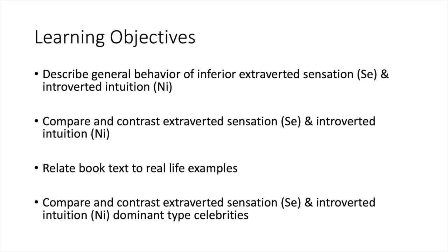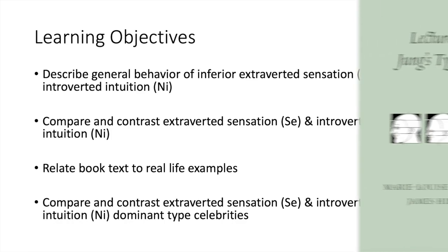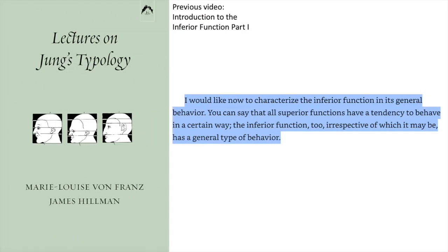I want to do this using the book and then relate it to real-life examples of celebrities using clips that can be found on my Instagram. I want people to be able to type other people based on what they've seen in clips of celebrities — to study the celebrity clips, go over this information, and then apply it in real life. I want to start off with a recap from the previous video, Introduction to the Inferior Function Part 1.